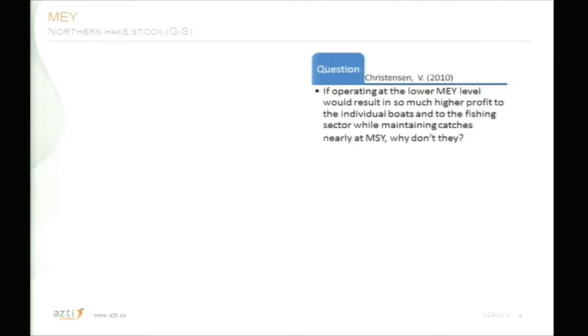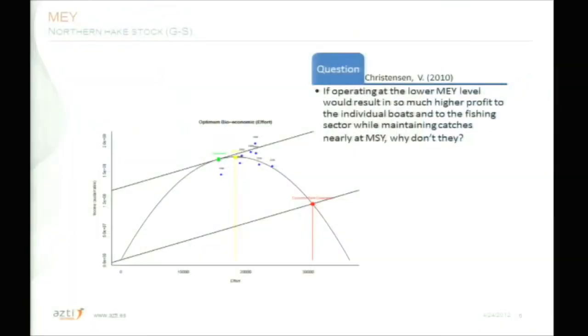I have checked some recent literature about MSY and MEY, and I would like to mention a paper by Christensen in 2010. Christensen asks: if operating at the lower MEY level would result in so much higher profit to individual boats and to the fishing sector by maintaining catches nearly at MSY, why don't they? As an example — Northern Hague, quite a schematic one — the blue dots are the real values for the Basque trawlers. I calculated the rent dissipation point and the optimal and MSY levels. The effort is well above both the MSY and maximum economic yield points.